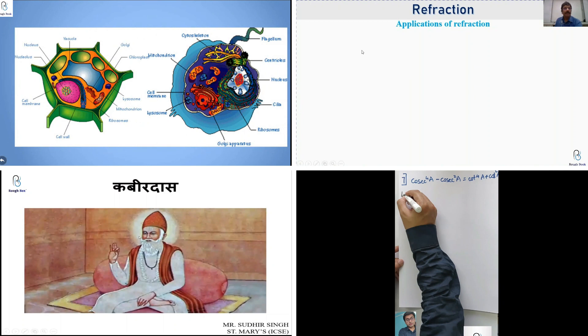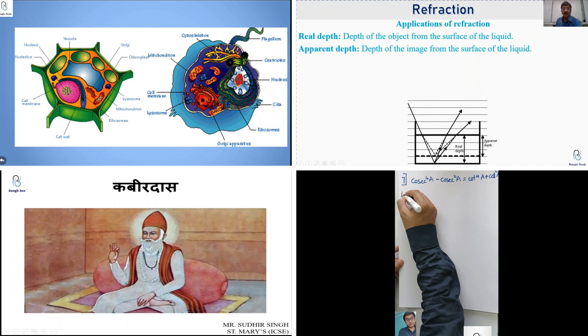The real depth is the depth of the object from the surface of the liquid, and apparent depth is the depth of the image from the surface of the liquid. Now with respect to the diagram which we had seen before, the base of the swimming pool appears raised. So from the surface to the base, the length is real depth. And from the surface to the image, the length is apparent depth.